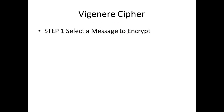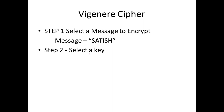The very first step in Vigenère cipher is you select a message to encrypt. I will select my name, Satish. The next step is to select a key. The key is any string that contains alphabets from A to Z. I have selected the key 'VIT' here. So we have finished step 1 and step 2.